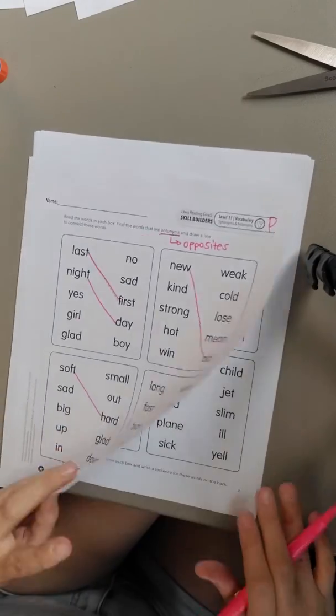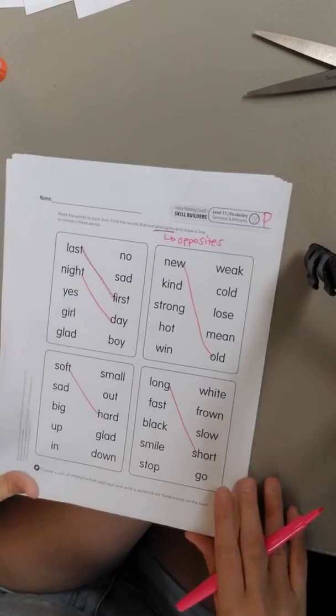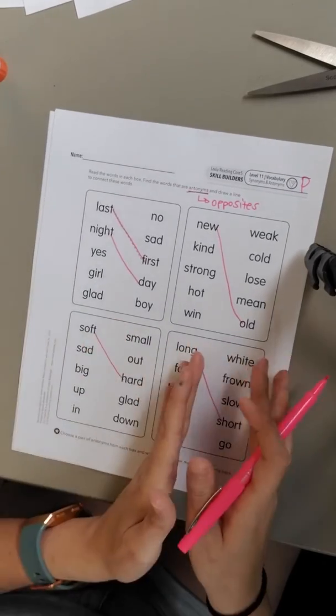When you're done with this sheet, you're going to go through R. So P, Q, and R this week. Put those three sheets onto the right side of your folder.